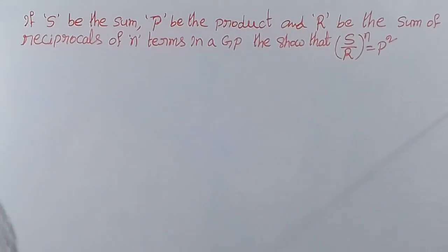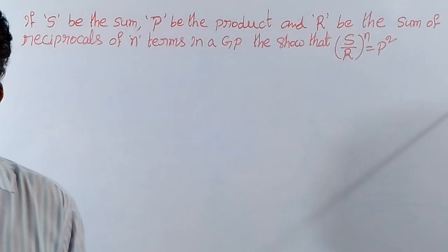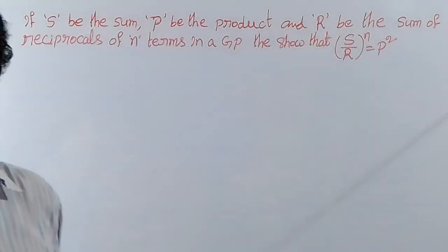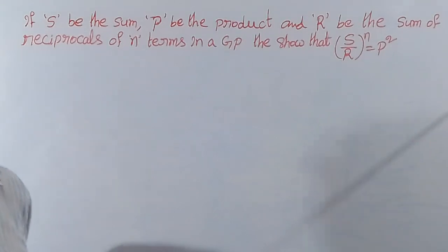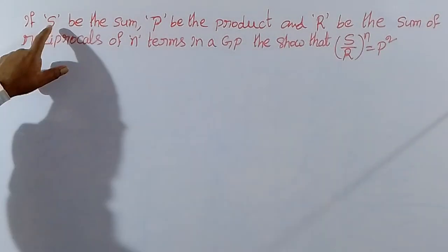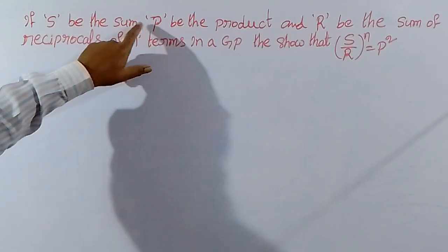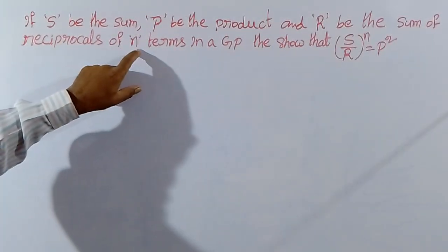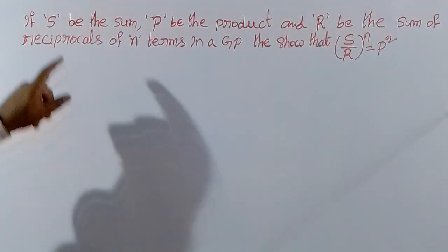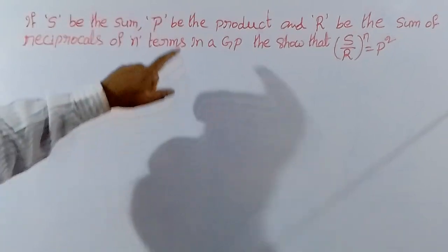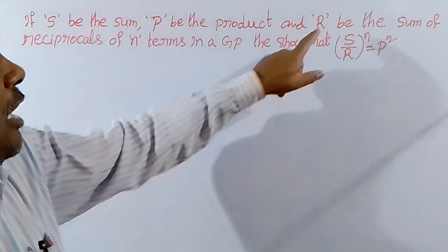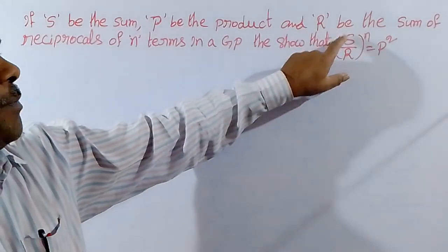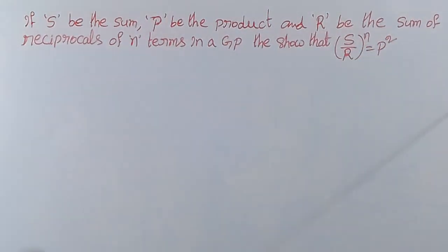Hi friends, welcome back to Vedavya's YouTube Maths channel. My name is Jayanathan Swarani. We are going to talk about 10th class progressions and competitive examination questions. If S be the sum, P be the product, and R be the sum of reciprocals of N terms in GP, then we show that S by R whole power N is equal to P squared.